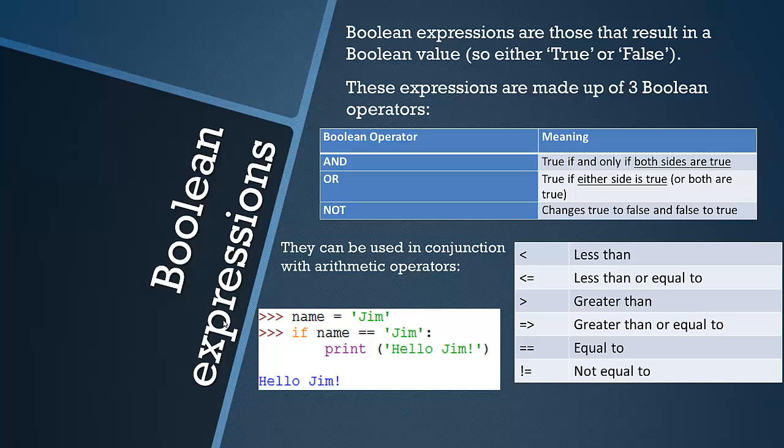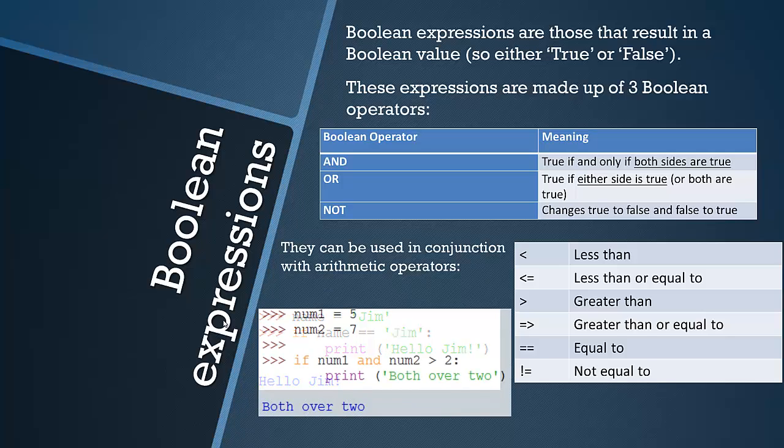Let's have a look at a few examples. First one quite simply, we're not using any Boolean operators, just the arithmetic ones. I've defined the variable as Jim, and I'm saying if this variable equals Jim then I'm going to print hello Jim. The program prints it because the name is clearly Jim.